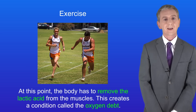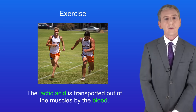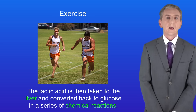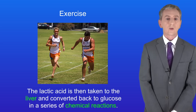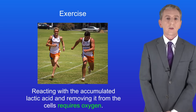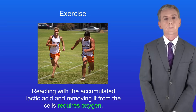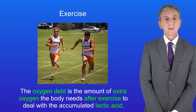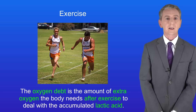During vigorous exercise, anaerobic respiration produces lactic acid in the muscles. The lactic acid is transported out of the muscles by the blood and taken to the liver, where it is converted back to glucose in a series of chemical reactions. Reacting with the accumulated lactic acid and removing it from the cells requires oxygen. So the oxygen debt is the amount of extra oxygen the body needs after exercise to deal with the accumulated lactic acid.